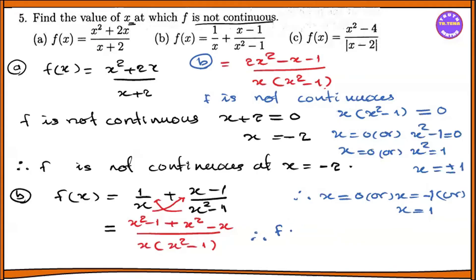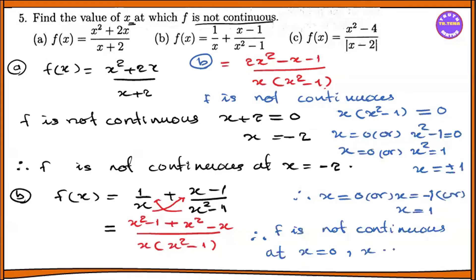Therefore f is not continuous at x equal to 0, at x equal to minus 1, and at x equal to 1. In particular, the discontinuities occur at x equals minus 1, x equals 0.